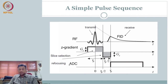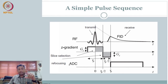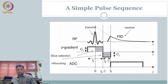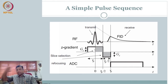Welcome back to yet another session. We want to proceed further. Last class we stopped with regards to slice selection. Now that we have selected a slice, this is the sequence diagram we represent. During the excitation, you enabled a gradient — by convention, we said this is the z-gradient which will give you axial slices.